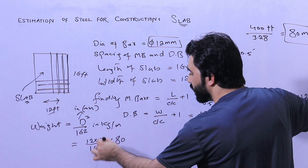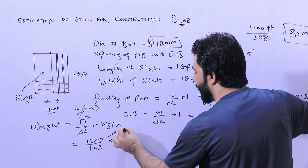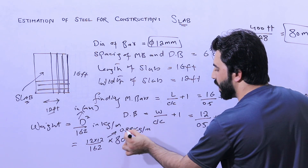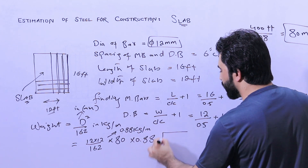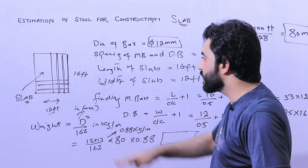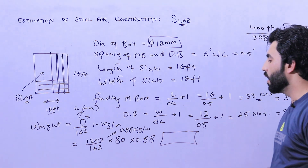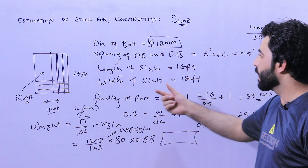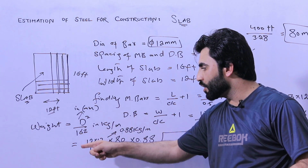When you calculate 12 multiplied by 12 divided by 162, you get 0.88 kg per meter. So for each meter, we have 0.88 kg. Multiply 0.88 by the total length in meters and you will get the total weight of steel reinforcement for this RCC slab — which has a width of 12 feet and a length of 16 feet — for a normal residential building.